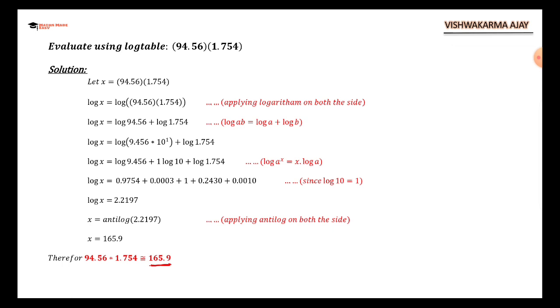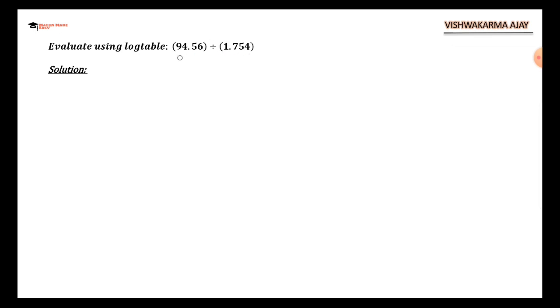That's why always don't forget to use this symbol. We move to the next one. This was multiplication. Now the other example we are going to see is division. For simplicity, I use the same numbers, just dividing here: 94.56 divided by 1.754. We will start with the same thing: let x equal this, and then apply log on both sides.